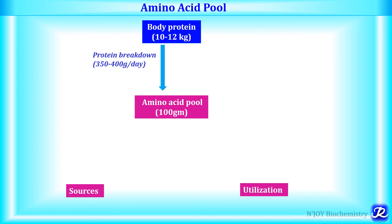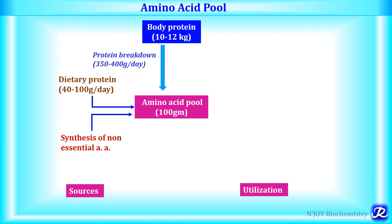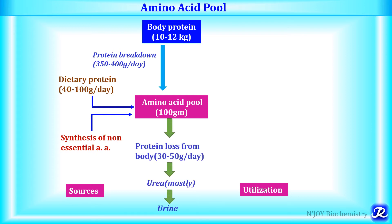Body protein is in a dynamic state. There is about 10 to 12 kg of body protein, and this amino acid pool gets amino acids through protein breakdown — about 350 to 400 grams per day. We also get amino acids from dietary protein — 40 to 100 grams per day — and synthesis of non-essential amino acids is also a contributor. Protein cannot be stored in the body, so there is protein loss of about 30 to 50 grams per day in the form of urea through urine, and that's why the same amount — 30 to 50 grams — has to be supplied daily to maintain nitrogen balance.